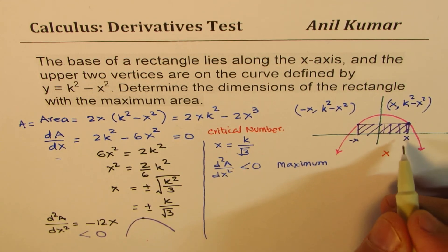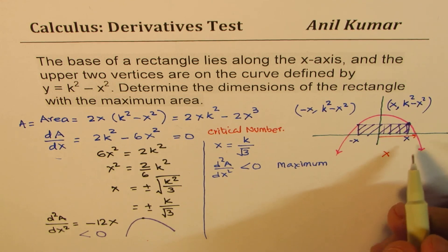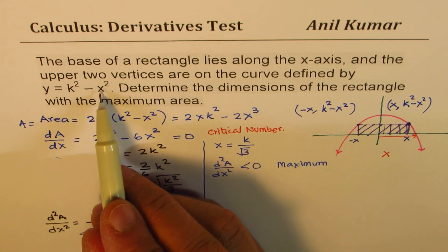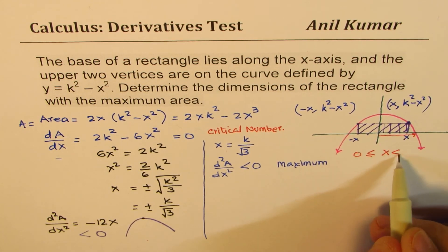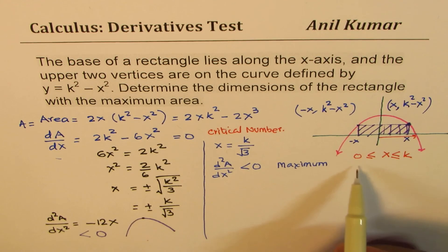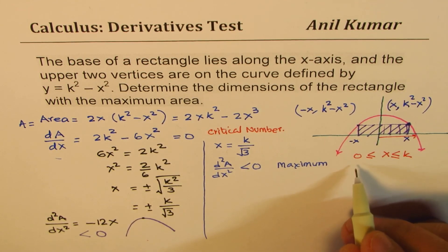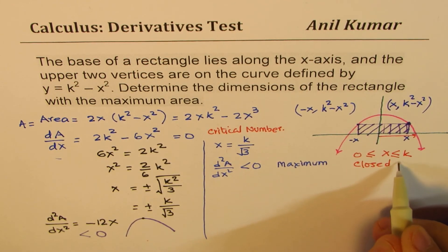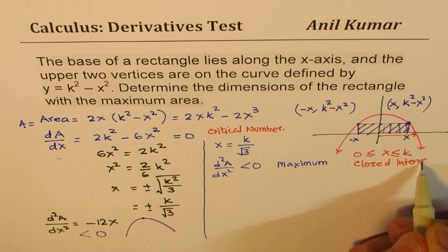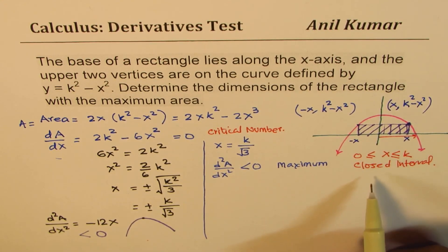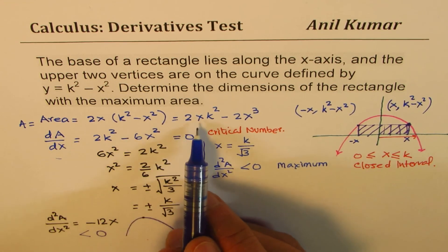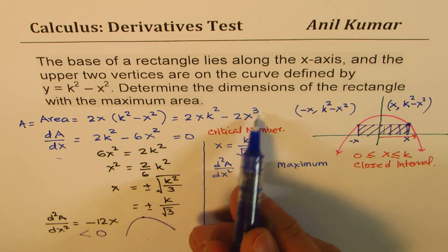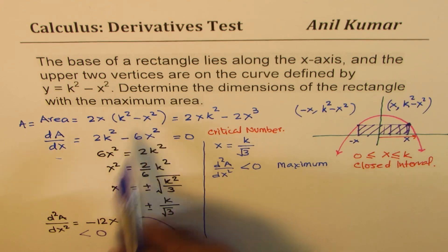Now, from here, we can say the value of x, let's consider the right half. The value of x could be equals to k or 0. So x is between 0 and k. Perfect. So we'll go with the closed interval. So in a closed interval, we can actually find the area, which is this formula itself. Area is 2x k squared minus 2x cubed, or 2x times k squared minus x squared.